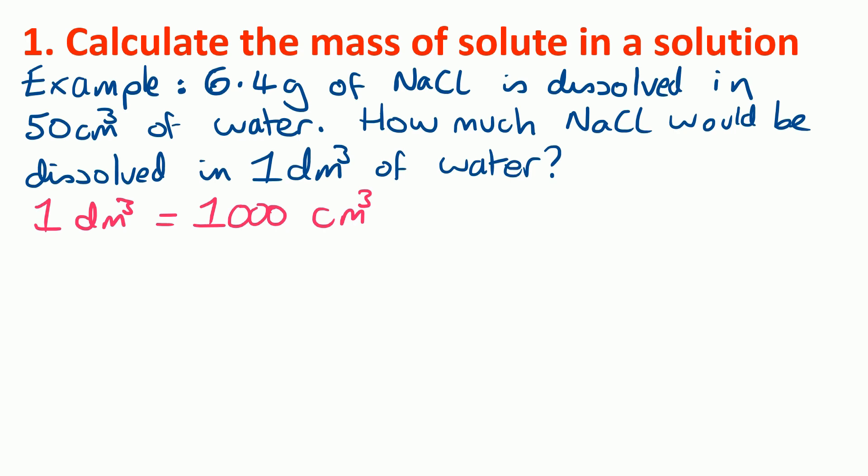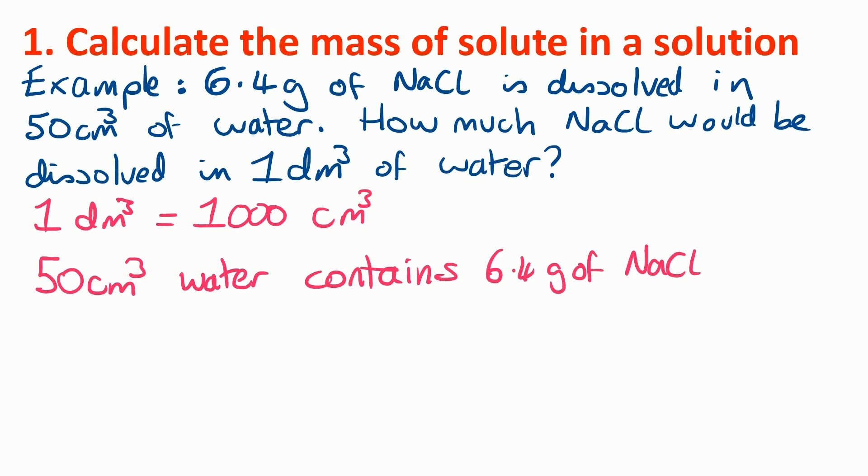So then it's just really a maths problem. If we've got 50 centimetres cubed of water containing 6.4 grams of sodium chloride, then to work it out for 1 centimetre cubed, 1 centimetre cubed of water contains 6.4 divided by 50, which is 0.128 grams of sodium chloride.